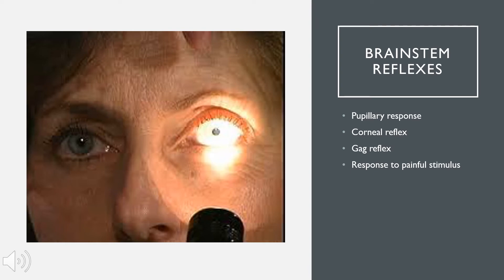There's also a corneal reflex where they brush a swab across the cornea and look for blinking. There's a gag reflex where they'll insert something into the throat and look for pharyngeal contraction. And then also, they do a test for a response to painful stimulus where they will typically pinch you in an area where there's a high concentration of nerve bundles and see if you have a protective motor response.